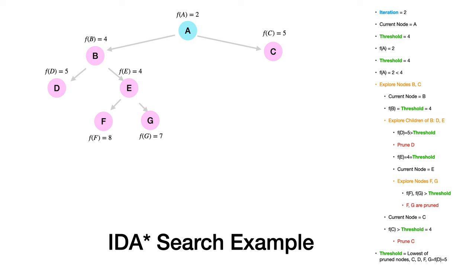After completing node B, we try node C, but node C has an F(n) value greater than the threshold, so we don't pursue C's children. This completes the second iteration.